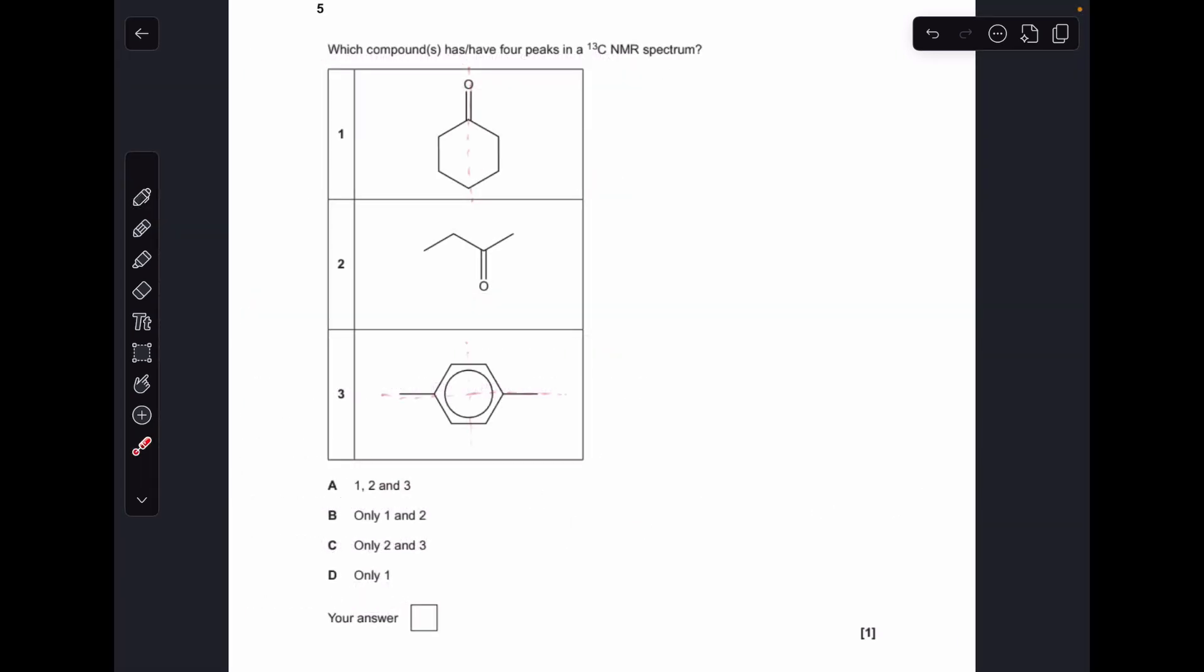Moving on to number five, so here's the lines of symmetry again. So you can see there's a line of symmetry down there in one, there's no line of symmetry in two, and in three, you've got two lines of symmetry that way and that way. So in terms of carbon environments, in the first one, we've got one, two, three, four. In the next one, they're all different, so four again. And in the last one, we've got one, two, but they're all equivalent three, so only three in that one. So it was only one and two, and so therefore the answer was B.